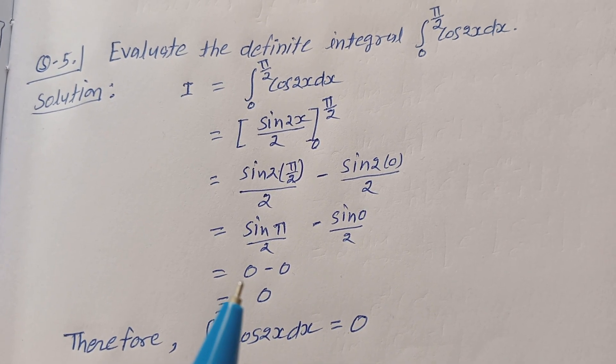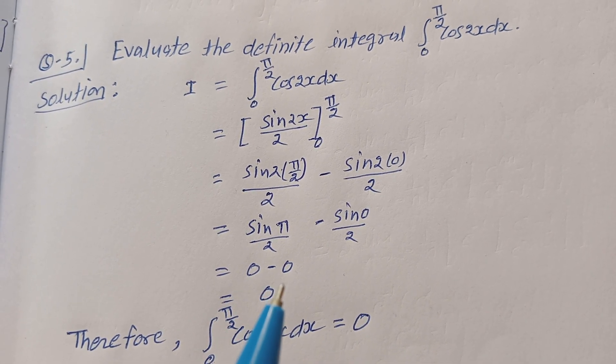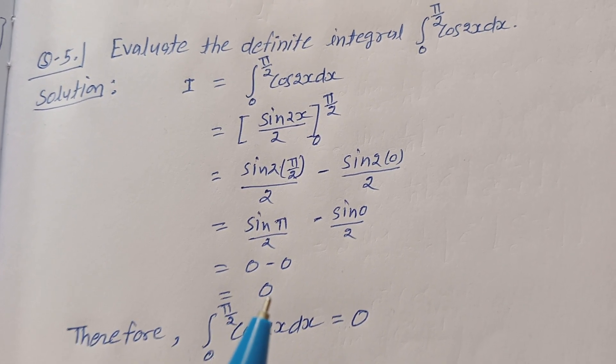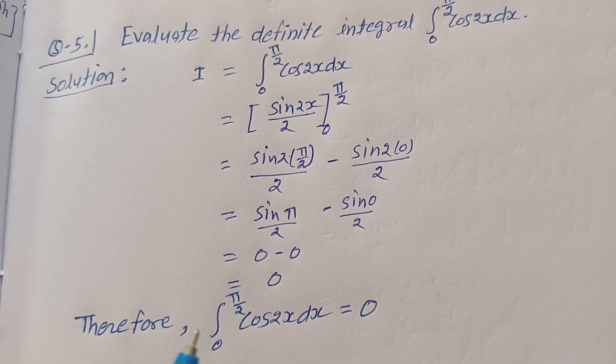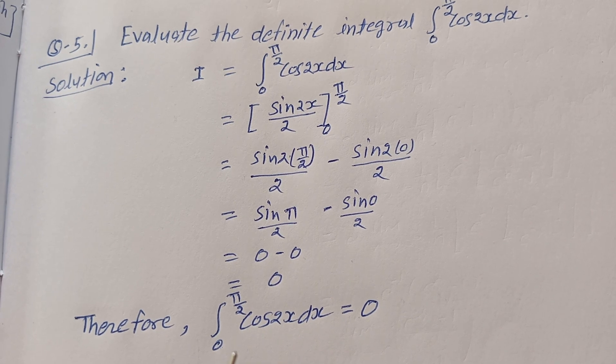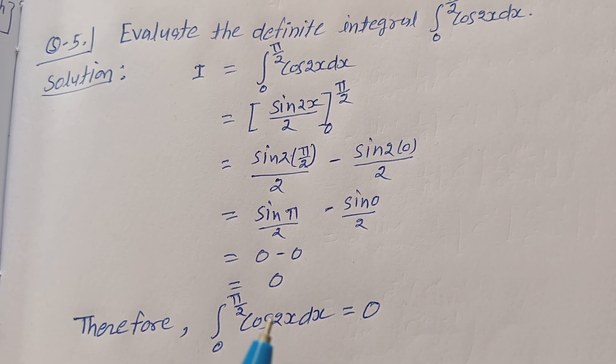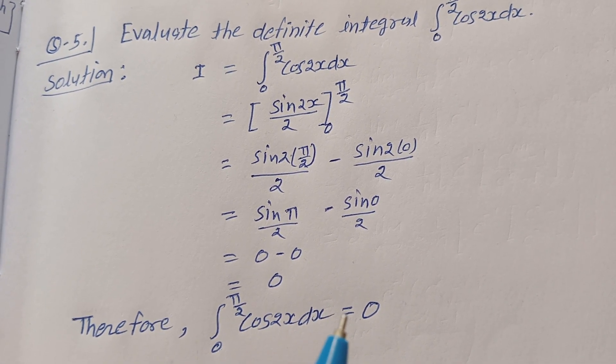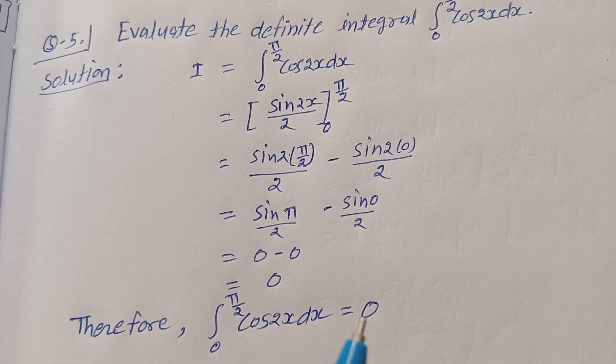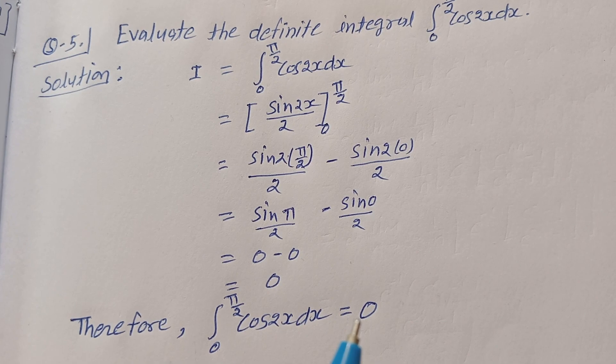Here sin(π) = 0 and sin(0) = 0, so this equals 0 minus 0 = 0. Therefore, the integration from 0 to π/2 of cos(2x) dx is equal to 0. That is the solution of the question.